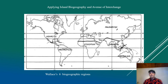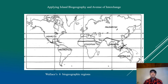An early zoogeographer named Wallace divided the globe into six biogeographic regions. I just want to mention him in case you ever hear about him. The idea was that you could make these longitudinal bands across the globe, and those bands closer to the equator have more biodiversity than those further away. By and large, this rule makes sense.